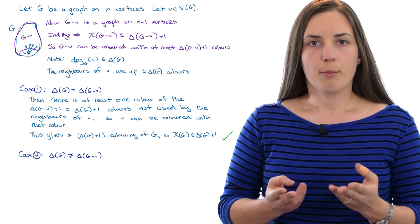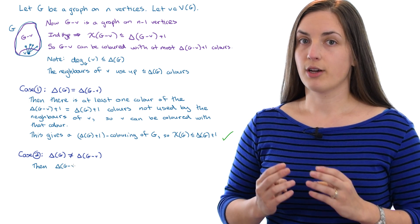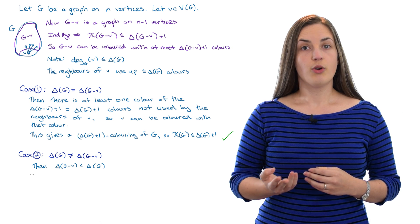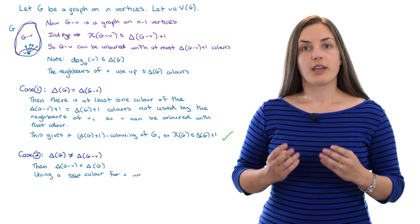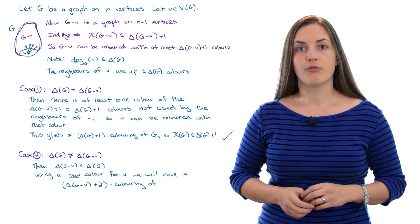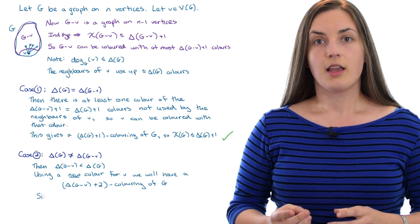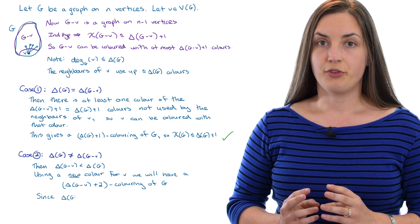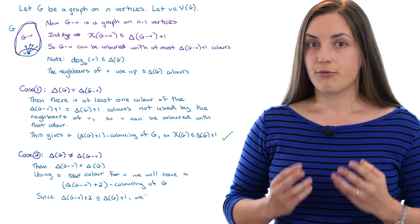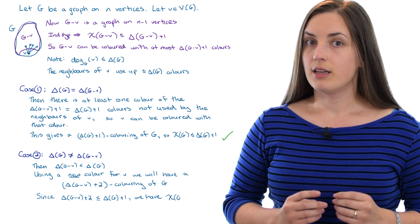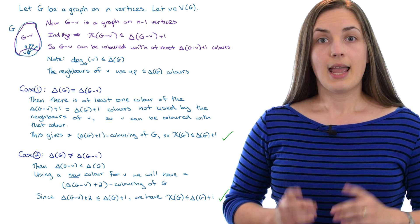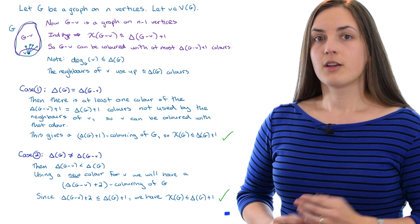The second case is if the maximum degree of G is not equal to the maximum degree of G without V. This means that the maximum degree of G without V is strictly less than the maximum degree of G. So using a new color for V will give us a max degree of G without V plus two coloring of G. Since the max degree of G without V plus two is at most the max degree of G plus one, it follows that the chromatic number of G is at most the max degree of G plus one. So in this case we're done as well, and this concludes the proof.